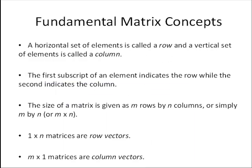Some fundamental matrix terms. A horizontal set of elements is a row. A vertical set of elements is called a column. The first subscript of an element indicates the row, while the second indicates the column. The size of a matrix is given as m rows by n columns, or simply m by n.